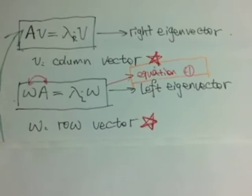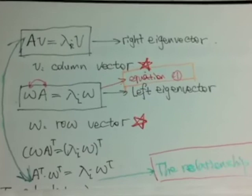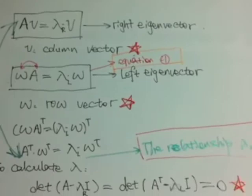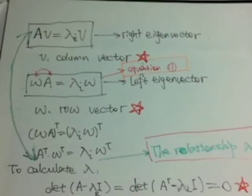If we transpose equation 1, we could easily prove that the eigenvalues for left and right eigenvectors are the same because the determinant of the two equations with green arrows are the same.